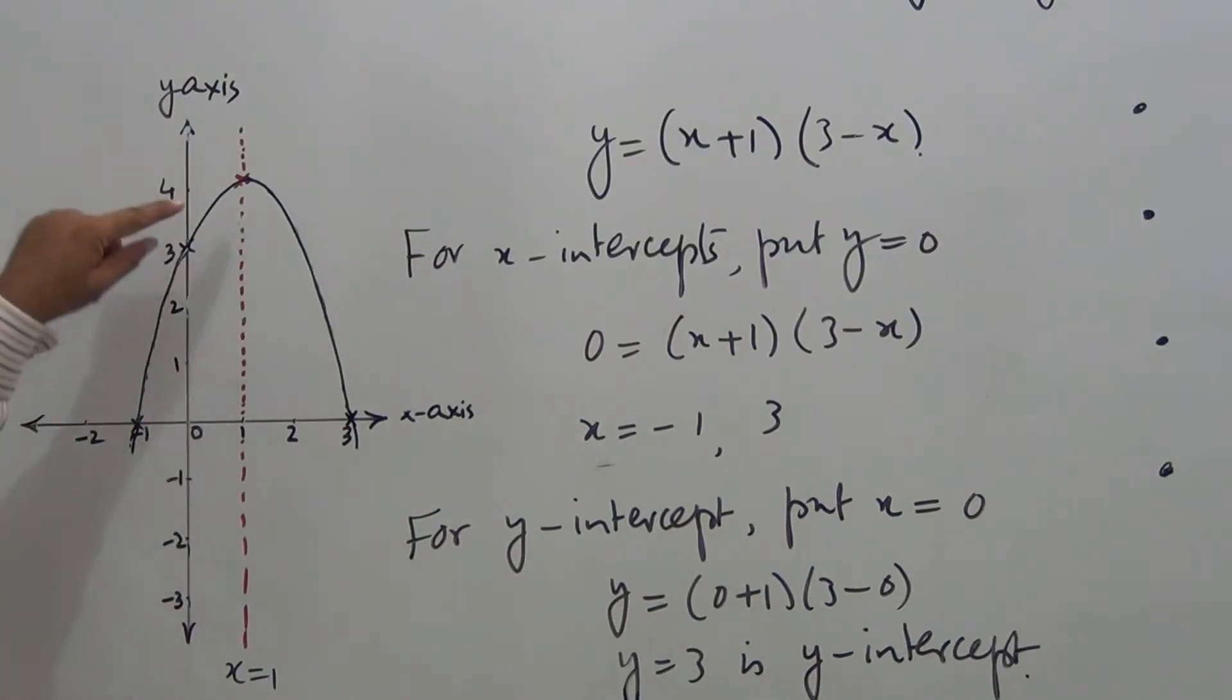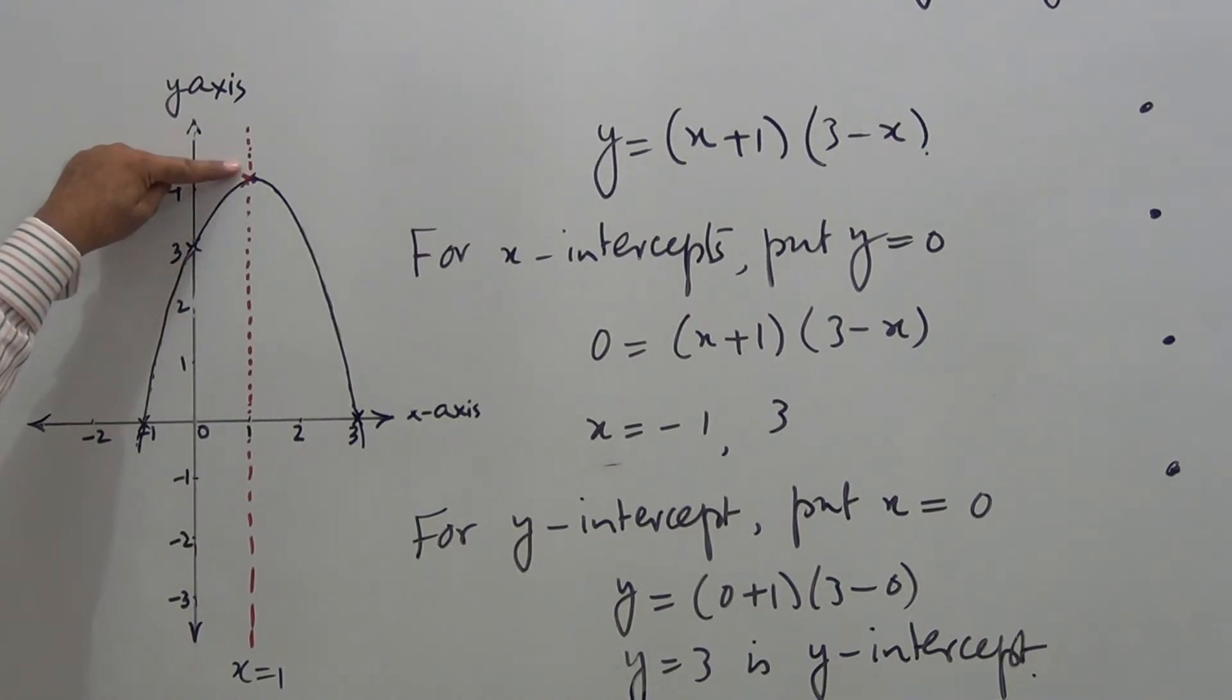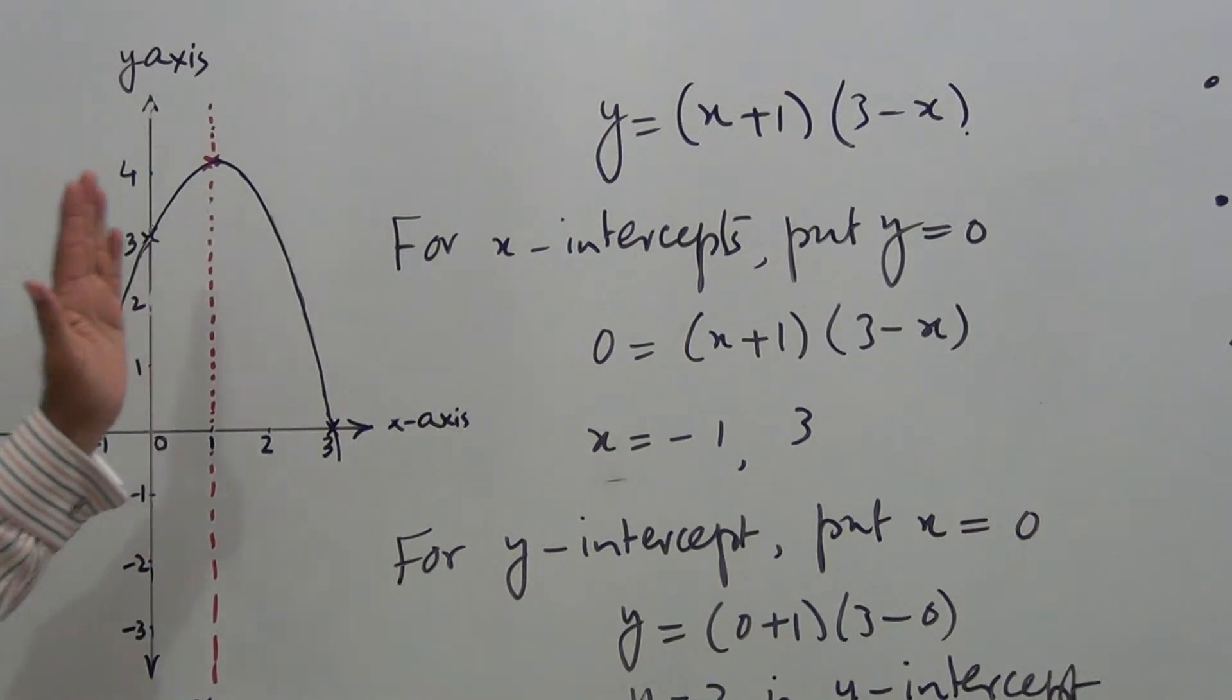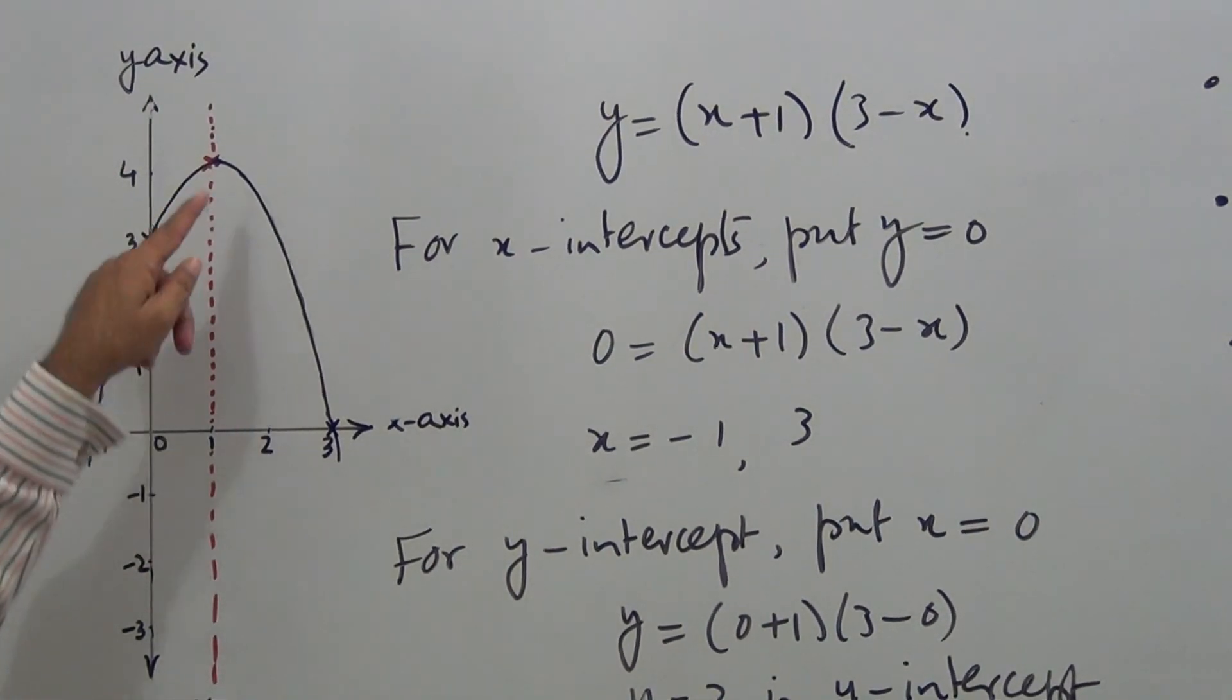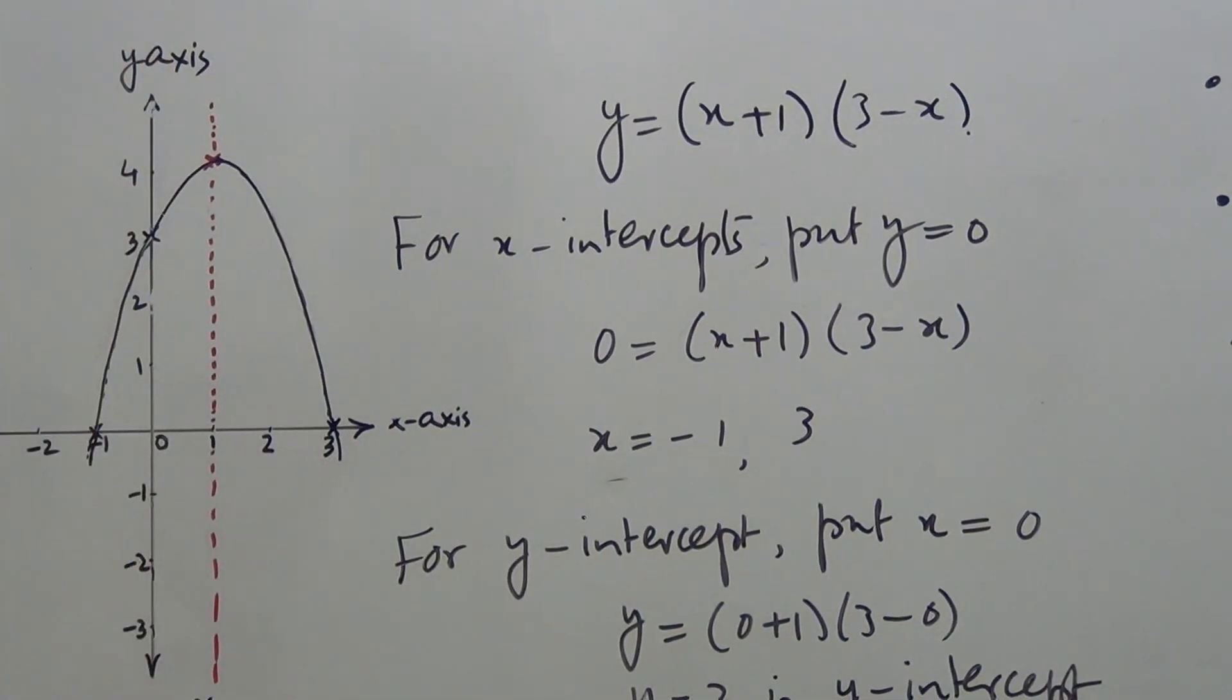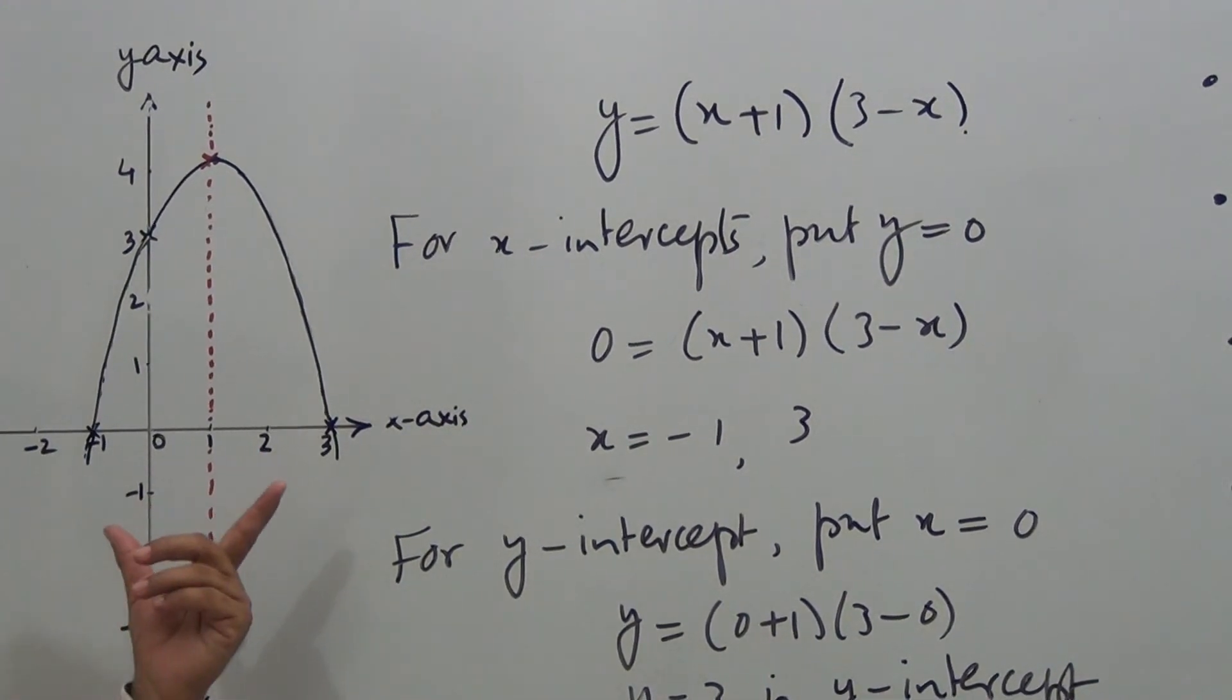So we have drawn a soft and smooth curve from the maximum value to the y-intercept to the x-intercept, and using symmetry, I have made the other part of the sketch. This is the line of symmetry, x = 1, and this is how we make a sketch of a quadratic expression.